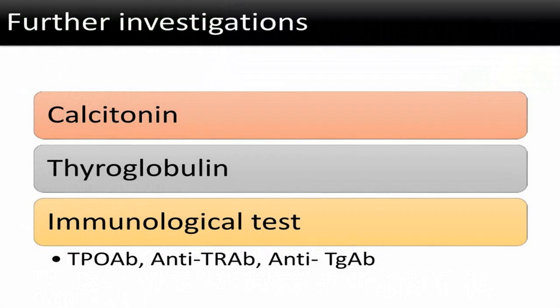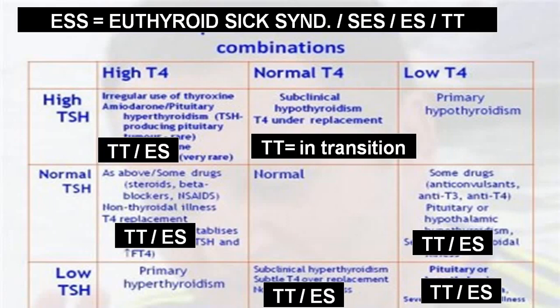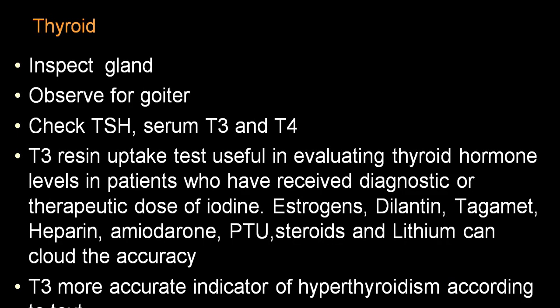Thyroid antibodies: TPO antibody and thyroglobulin antibody are elevated in Hashimoto's thyroiditis; TSH receptor-stimulating antibody (TRAb) is elevated in Graves' disease. ECG shows bradycardia and low-voltage QRS complex. A standard investigation algorithm: if TSH is elevated, consider primary; if normal or low, consider central variety. Check free T4 to confirm — if low with high TSH, it is classical primary hypothyroidism. Do TPO to differentiate Hashimoto's.